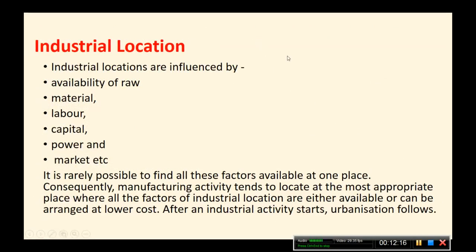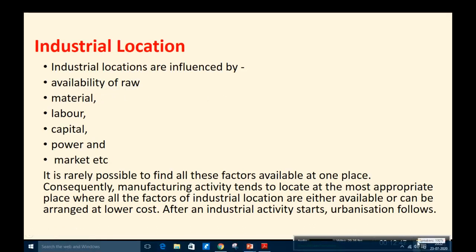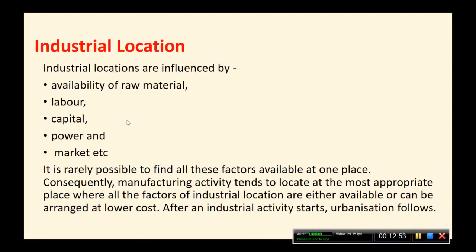Industrial location: whenever an industrialist is going to set up an industry, they are influenced by some physical factors or economic — human — factors. Industrial locations are influenced by the availability of raw material. Raw material is the main input of production, so first of all the industrialist thinks about the easy and cheap availability of raw material.